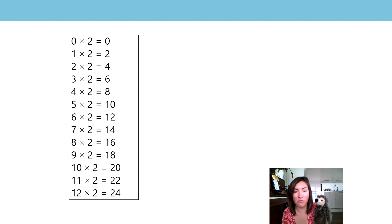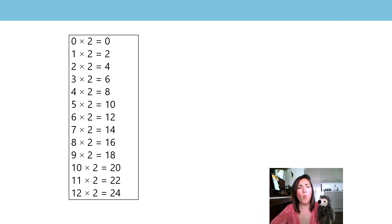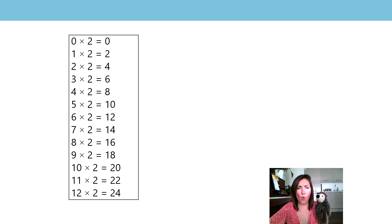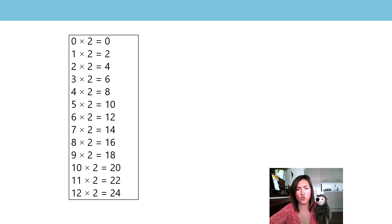Harold wants us to get our best superhero voice ready! Let's start at the beginning again at zero with our superhero voices. Here we go: zero twos is zero, one two is two, two twos are four, three twos are six, four twos are eight, five twos are ten, six twos are twelve, seven twos are fourteen, eight twos are sixteen, nine twos are eighteen, ten twos are twenty, eleven twos are twenty-two, and twelve twos are twenty-four. Bravo everyone for doing your fantastic superhero voice!